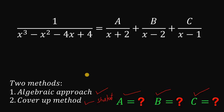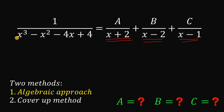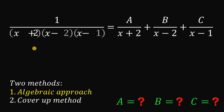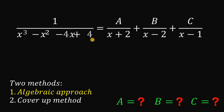Let's start with our first solution, which is using the algebraic approach. It is given that we have x plus 2 on the denominator, x minus 2 on this denominator, and x minus 1 on this denominator. If we factor x cubed minus x squared minus 4x plus 4, we get x plus 2 multiplied by x minus 2 multiplied by x minus 1.